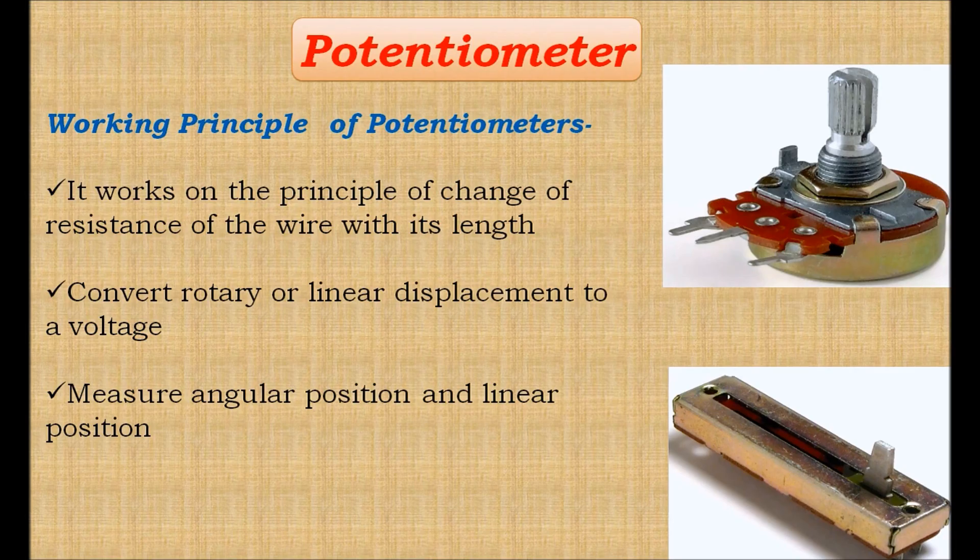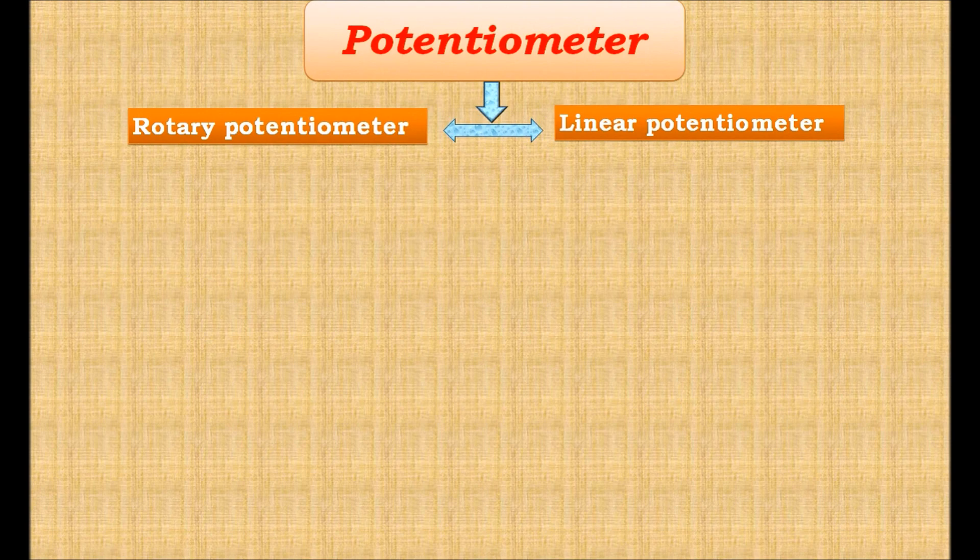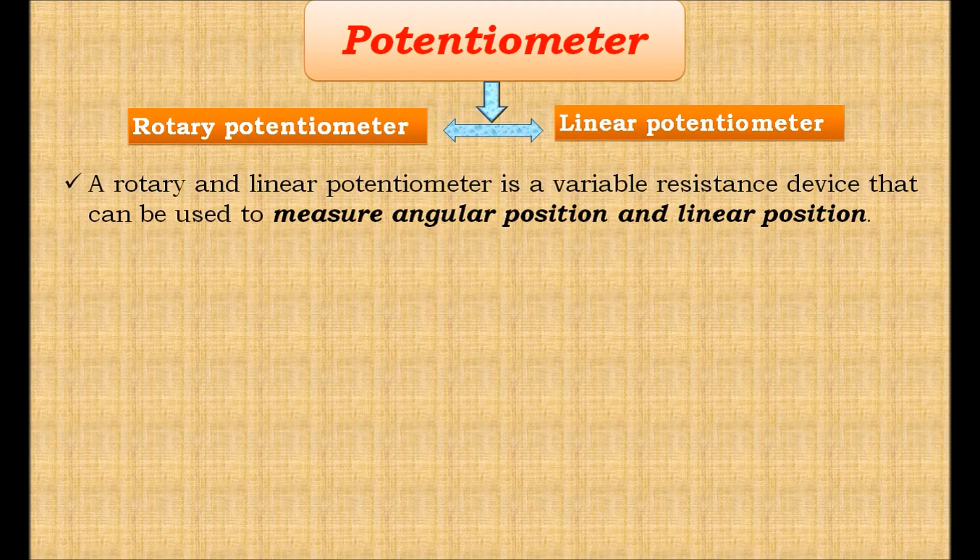Thus, as the length of the wire changes, the resistance also changes. Potentiometers are available as rotary and linear types that can be used to measure angular position and linear position respectively.